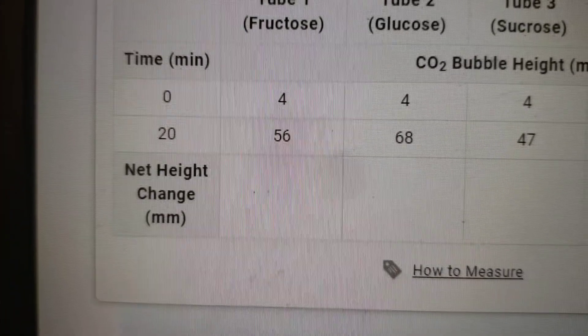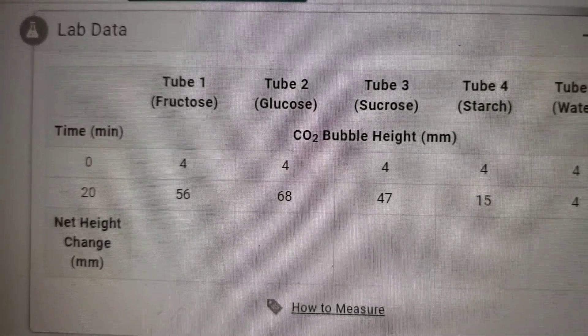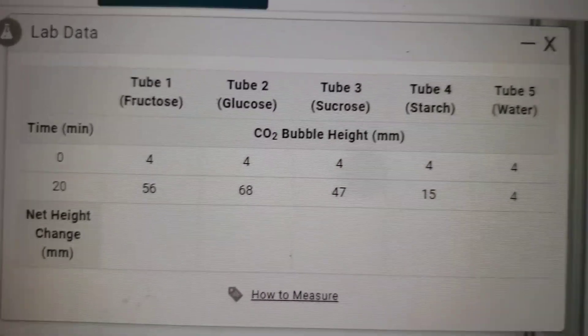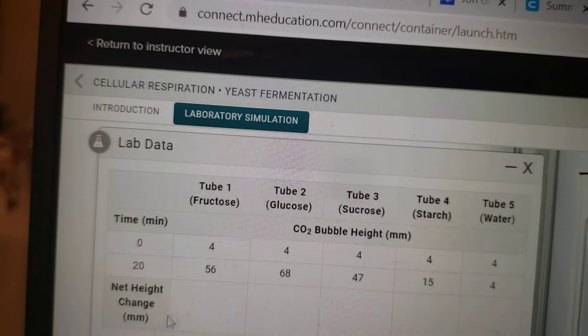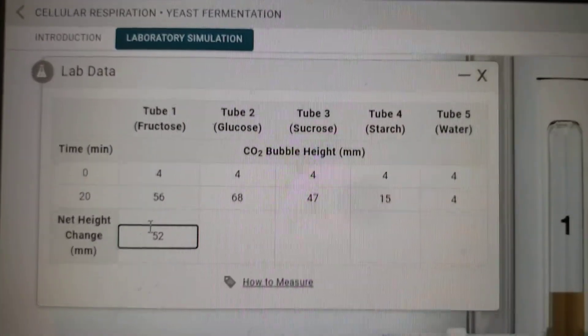So the height at zero minutes was four in tube one, the height at 20 minutes in tube one was 56. So 56 minus four is 52. Let's record the lab data, 52 millimeters.